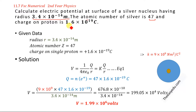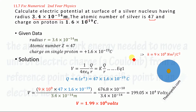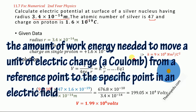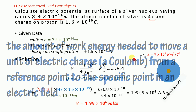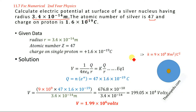We will calculate the electric potential at the surface of the nucleus of the silver atom. Electric potential is the amount of work done in bringing a unit charge from one place to another in an electric field, or from one place to a reference point in an electric field. This is given as V = work done per unit charge, or V = (1/4πε₀) × q/r.